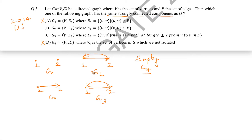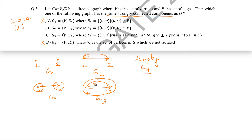Recall the definition: a strongly connected component is a set of vertices in which every vertex is reachable from any other vertex. In the original G, 2 is reachable from 1 but 1 is not reachable from 2, giving two separate components. But in G3, 1 and 2 are mutually reachable, forming a single strongly connected component. So option C is not the answer either.